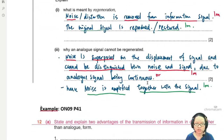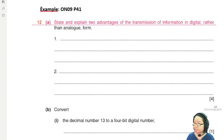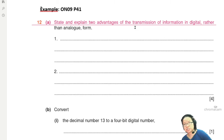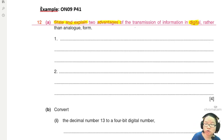This is a past year question from Winter 2009 Paper 4-1. It starts by asking: what are the two advantages of transmission of information in digital rather than analog form? State and explain the advantages.